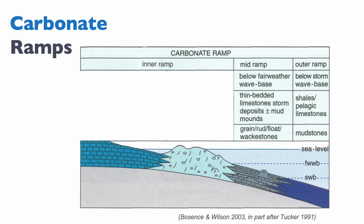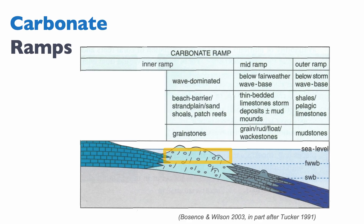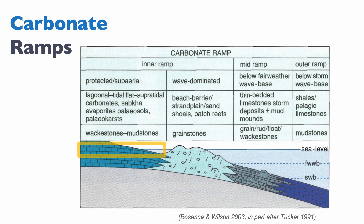Then we have the inner ramp. The inner ramp comprises the shoal itself and everything more landward from the shoal. The shoal is wave dominated and forms a beach barrier or strand plain — essentially a massive body of sand that can contain patch reefs, but does not form continuous reefs, because if it did, you'd have a rimmed platform. The main texture you can expect are grainstones. Beyond that, into the inner ramp, you're in a protected environment with very low angle dipping systems.